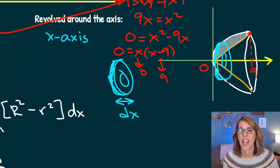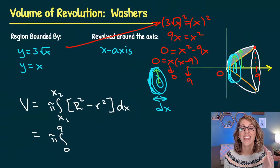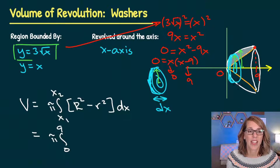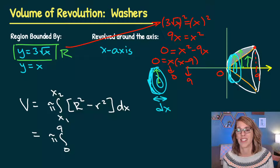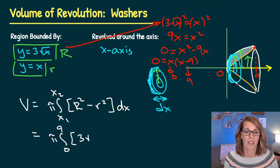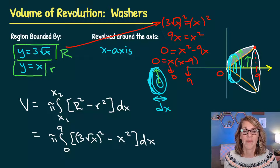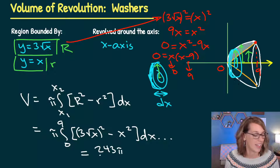So the integral runs from zero to nine. My outer radius goes from the center to the outer edge of my volume — that's the white curve, so y equals 3 radical x is my outer radius. My inner radius measures just to the inside of the washer, the empty space, up to my line — so y equals x is my inner radius. Plugging into the formula: pi times the integral from 0 to 9 of (3 radical x) squared minus x squared dx. Working this out gives a volume of 243π divided by 2.